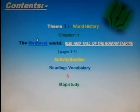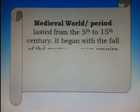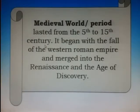The contents cover Theme 1: World History — The Medieval World, Rise and Fall of the Roman Empire, pages 2 to 4, including reading, vocabulary, and map reading activities. The medieval world or period lasted from the 5th to the 15th century. It began with the fall of the Western Roman Empire and merged into the Renaissance and the Age of Discovery.